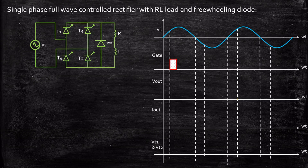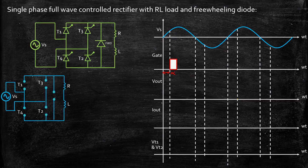We will be applying a gate pulse at alpha during the positive half cycle. So the firing angle alpha is applied at this instant. The supply voltage goes positive and negative, and thyristor T1 will be forward biased because positive is connected to the anode, and thyristor T2 will be forward biased because negative is connected to cathode. As a result T1 and T2 act as short circuit whereas T3 and T4 act as open circuit.